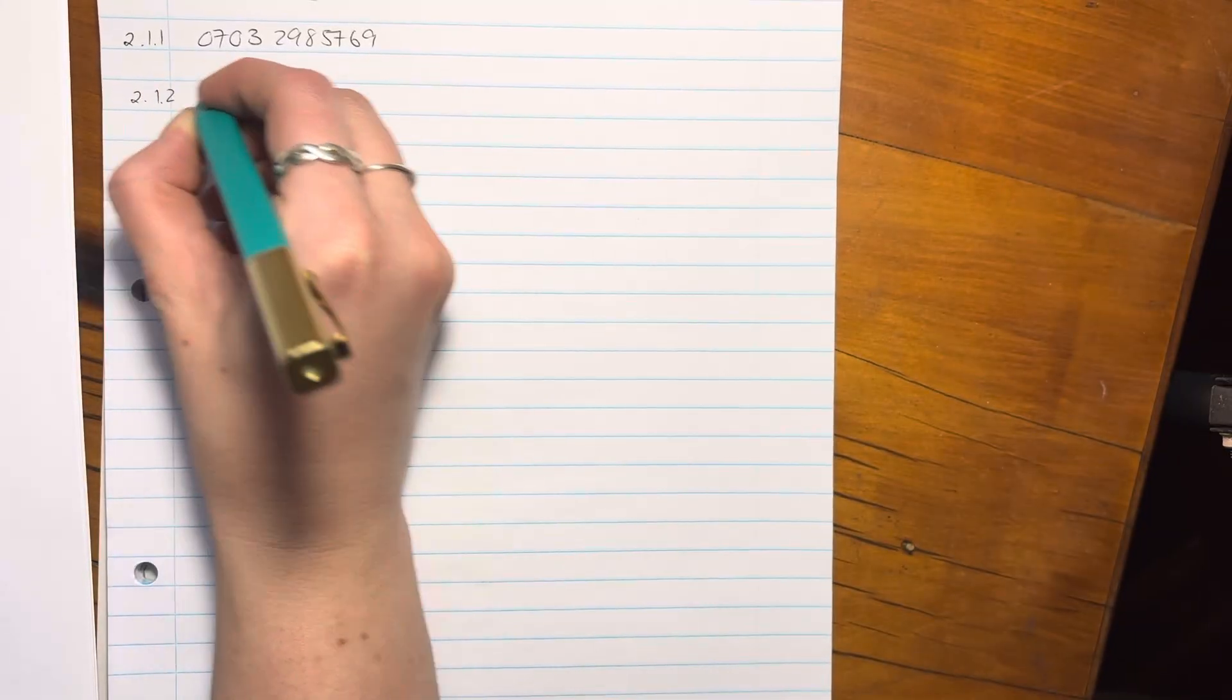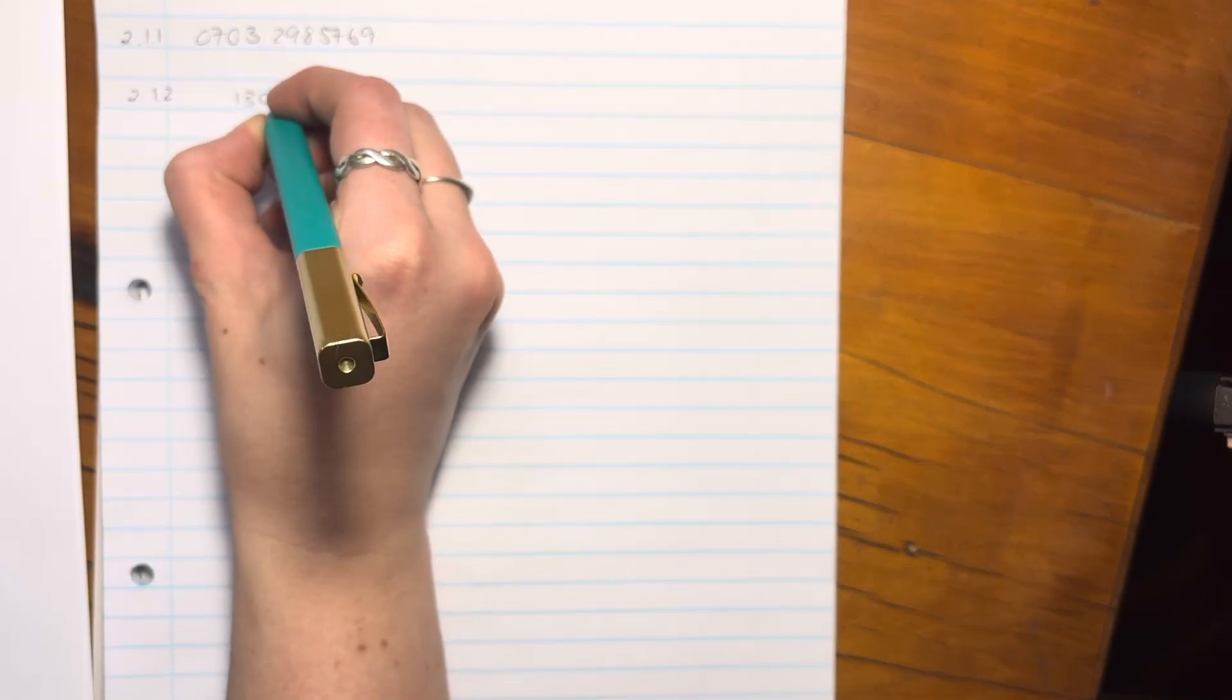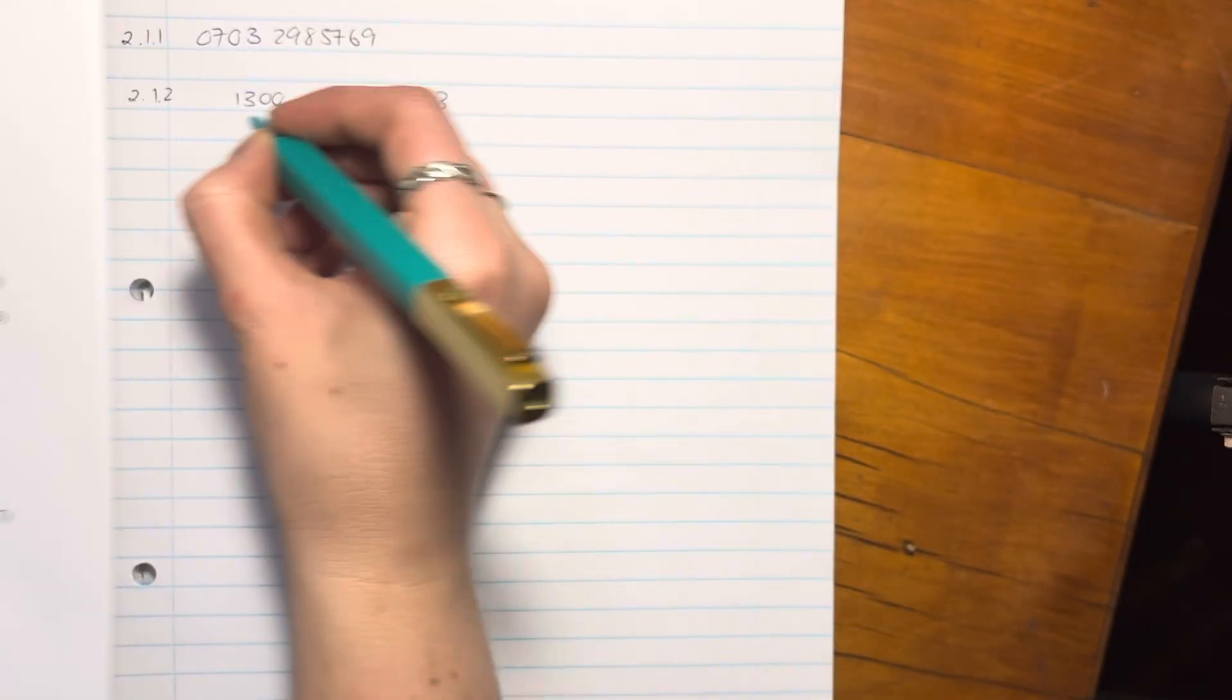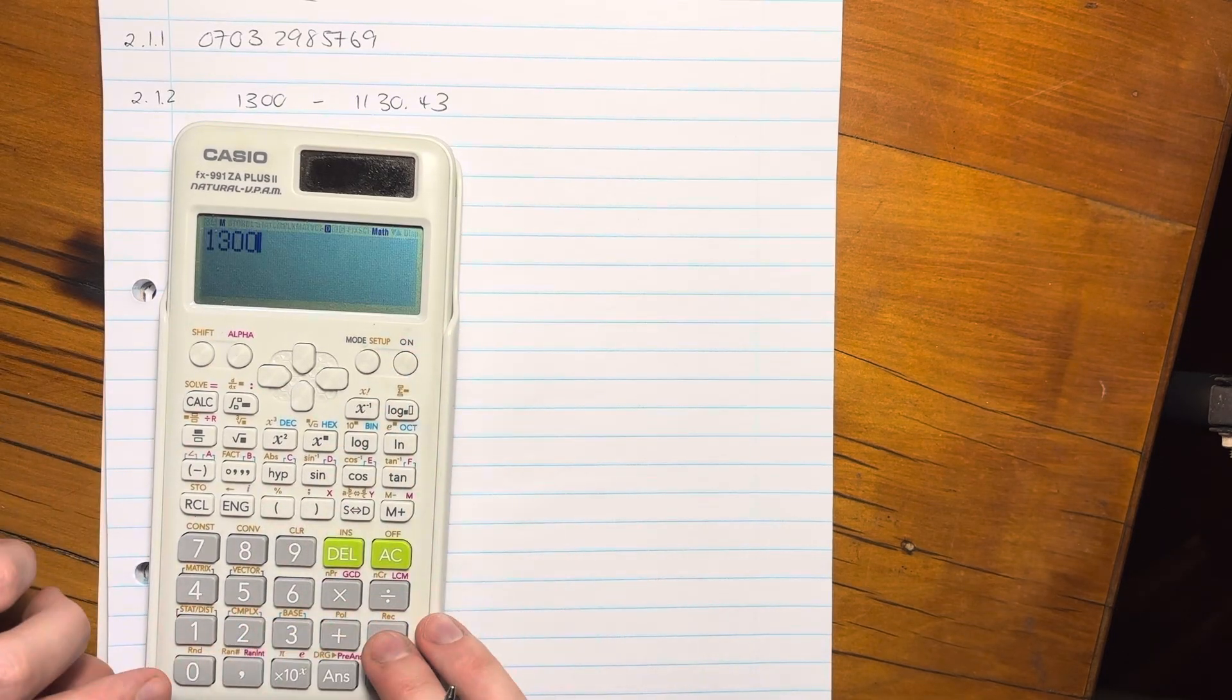Either will give you the same answer, right? And both will be correct, so don't be stressing about that. So let's just do the easier one where we say, well, my total is this. And the amount of my electricity cost me 1130.43. So my VAT has to be the difference between those two. Pop that into my calculator, 1130.43.